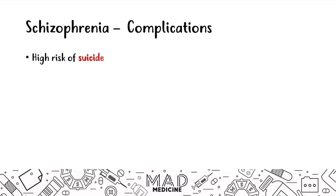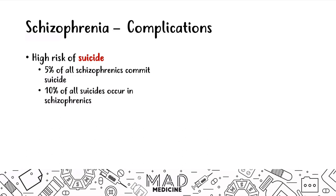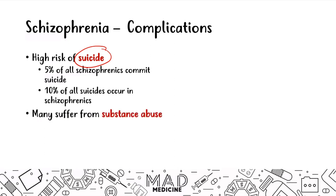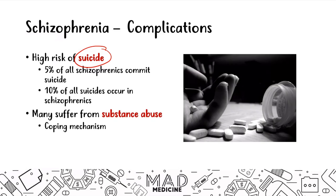When it comes to complications, patients are at high risk of committing suicide — 5% of all schizophrenics commit suicide, and 10% of suicides in general occur in schizophrenics. Make sure you're screening them for suicide. On USMLE Step 1, they may ask what this patient is most at risk of — beyond medication side effects, the answer is suicide. Many also suffer from substance abuse issues as a coping mechanism for hearing voices, delusions, or hallucinations, which can itself become a mode of suicide.